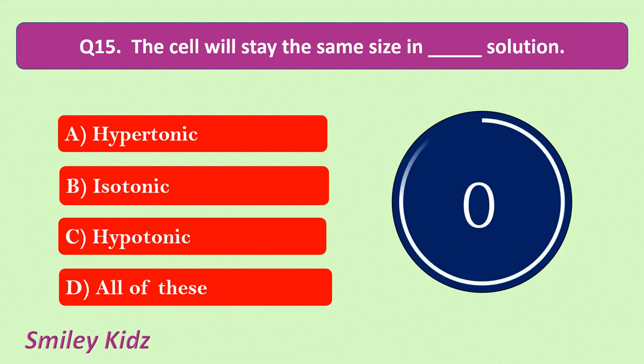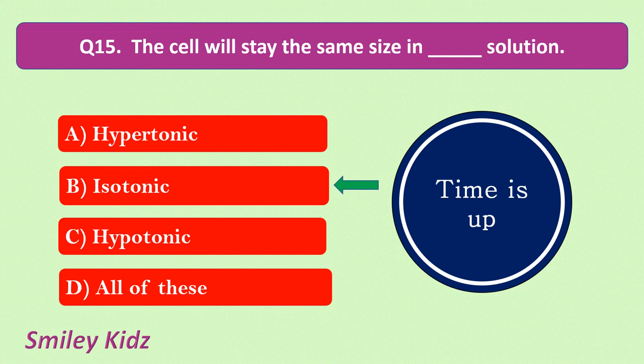Your time is up and the correct answer is isotonic solution. The cell will stay the same size in isotonic solution — neither will it shrink nor will it swell. It will remain the same size in isotonic solution.